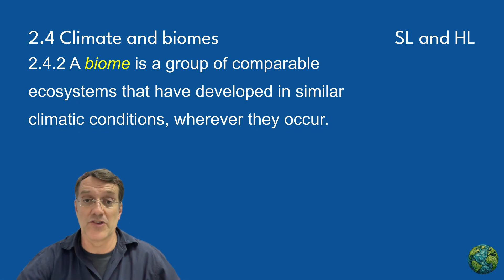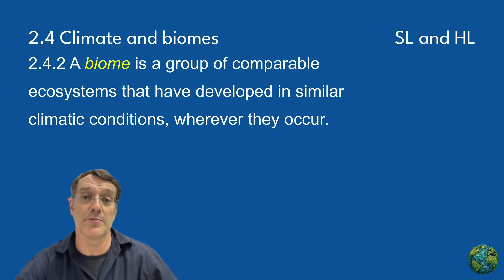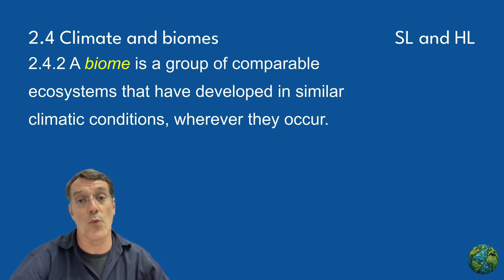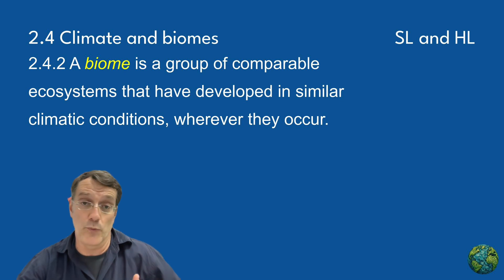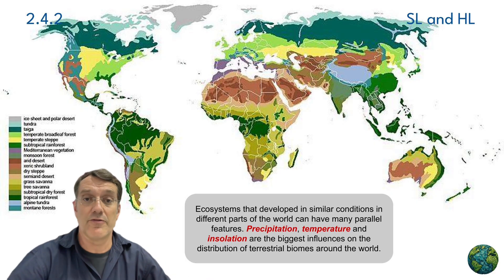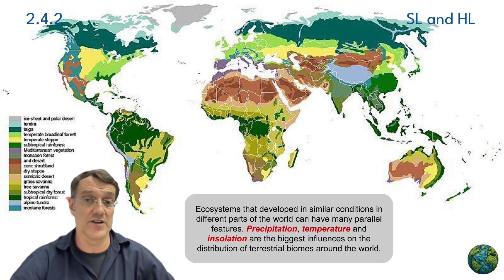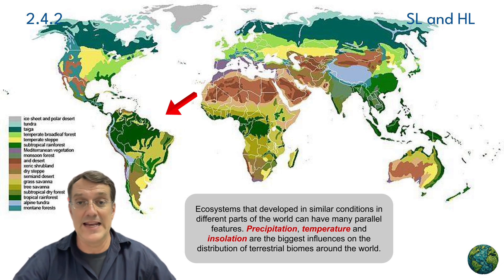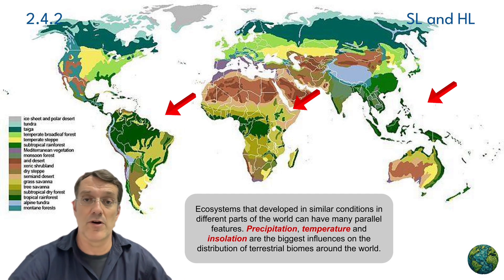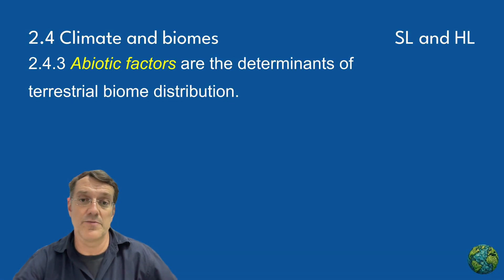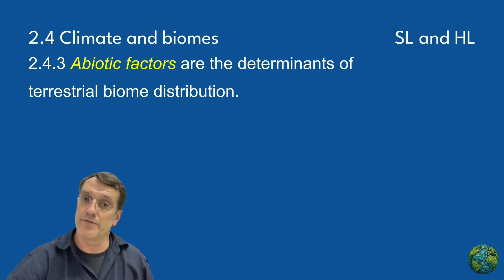A biome represents a group of comparable ecosystems that have developed under similar climatic conditions wherever they occur on Earth. What's fascinating is how similar conditions produce similar ecological communities, even when they're separated by really big distances. Tropical rainforests share key characteristics whether they're in South America, Africa, or Southeast Asia, because they experience similar temperature and rainfall patterns. Ecosystems that develop under similar conditions show remarkable parallels in their structure and function.